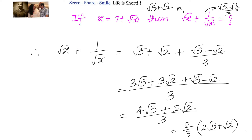So if x equals 7 plus root 40, then root x plus 1 by root x equals 2 by 3 into 2 root 5 plus root 2. To recap: we assumed root x equals root a plus root b, squared both sides to get x equals a plus b plus 2 root ab, equated to get a plus b equals 7 and ab equals 10, found a equals 5 and b equals 2, then rationalized 1 by root x to get root 5 minus root 2 by 3, and combined to get the final answer.